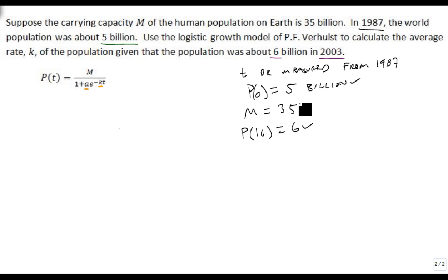So, we'll start with the P of 0, because that's the easiest. If we can raise something to the 0 power, it causes it to go away. So, P of 0 is equal to M over 1 plus A times E to the minus K times 0, which makes this whole thing go to 1. So, P of 0 is equal to 35 over 1 plus A, and P of 0 is 5.